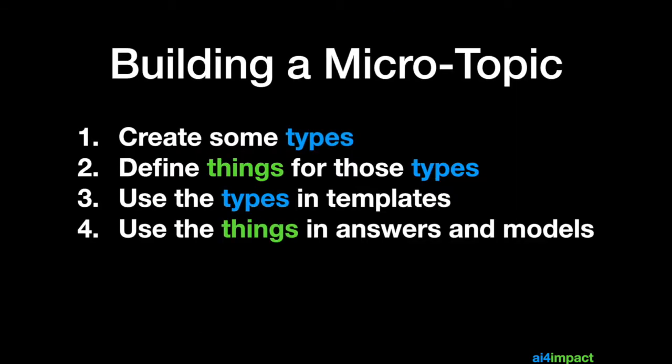Let's just review a few things that you need to do to build your microtopic. The first stage is to create some types relevant for your microtopic. Start simple. Start with a few types which are relevant to the microtopic and gradually build those up. You want to then define things for those types. Of course you need to use those types in templates. A good type would be used in many different templates. And lastly you can use things in answers and models.